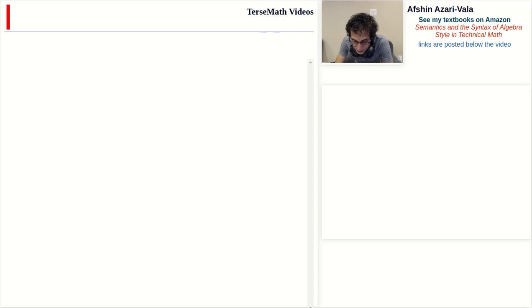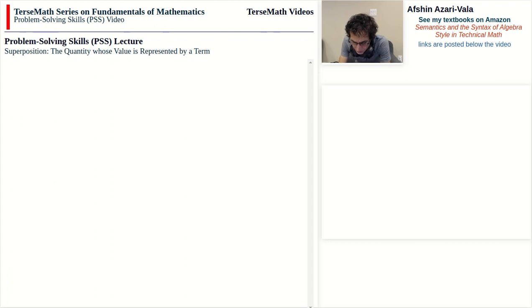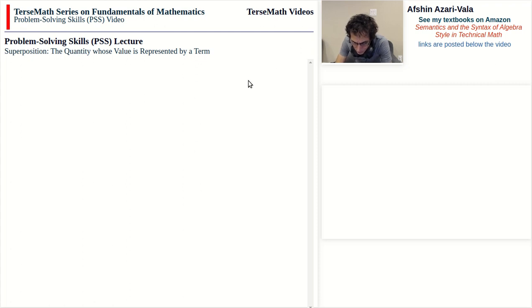Hello everyone and welcome to the next video in the series. This is a problem solving skills video on the topic of superposition, and in this video we will focus on the quantity whose value is represented by a term. I've become aware of a few problems with the videos, including the lighting, because the quality is not very good. I recently bought a ring light and I'm hoping that in a couple of days when I receive it, the quality of the video will become much better.